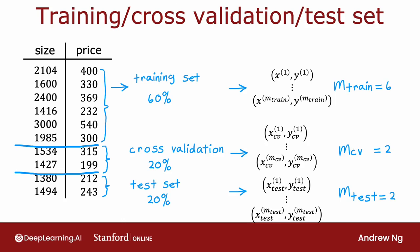So the way we'll modify the procedure introduces a new subset of the data called the cross-validation set. The name cross-validation refers to the fact that this is an extra data set we're going to use to check or cross-check the validity—really the accuracy—of different models.